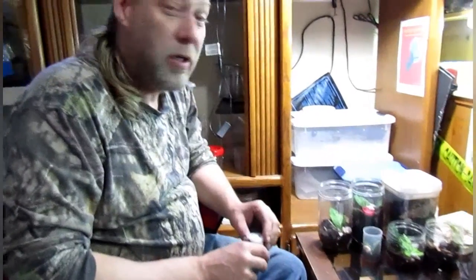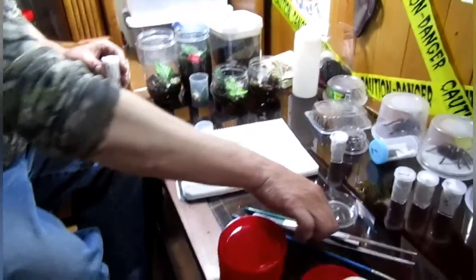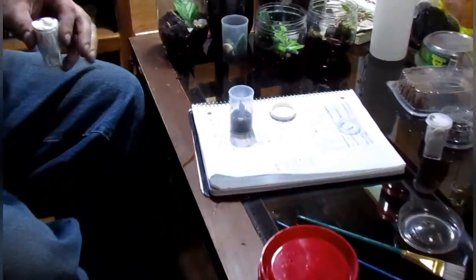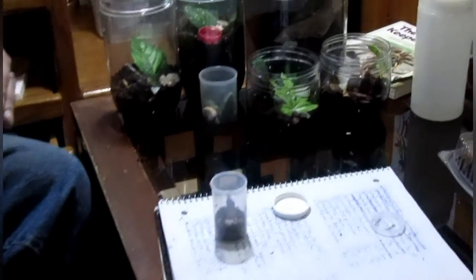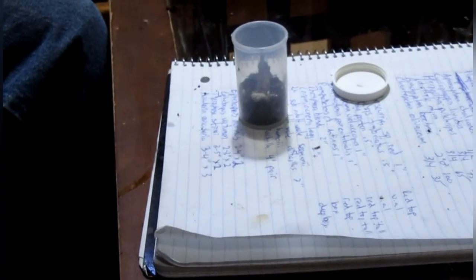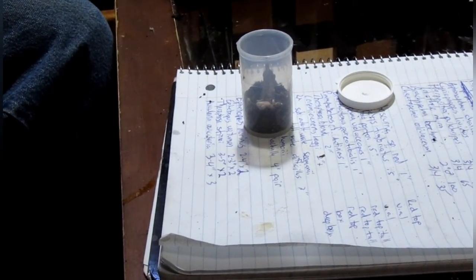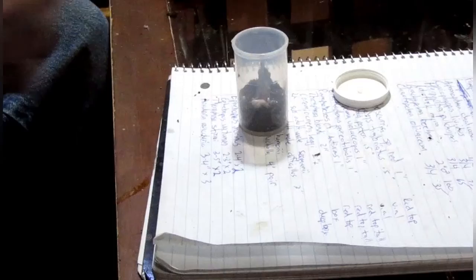Starting with the smallest, Grammostola porteri, half an inch. This will be our second porteri. The first tarantula we ever got was a porteri. We still have her. She is over 20 years old. Hopefully this one will last as long as she has.